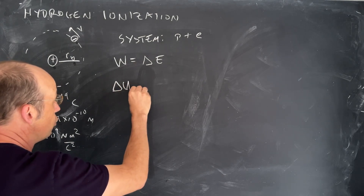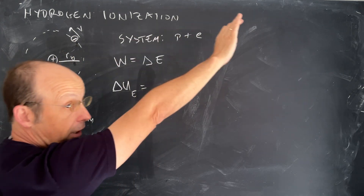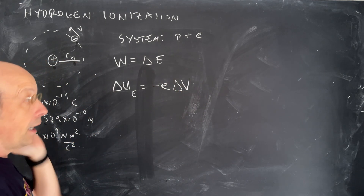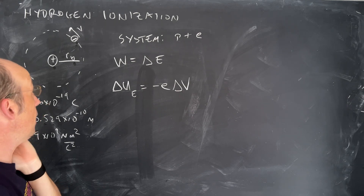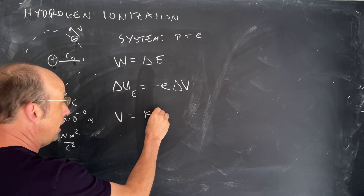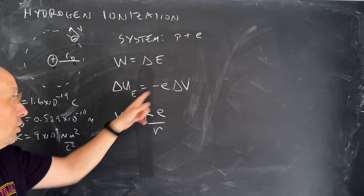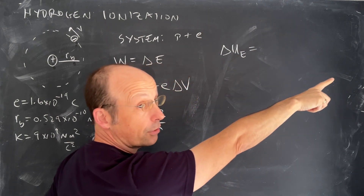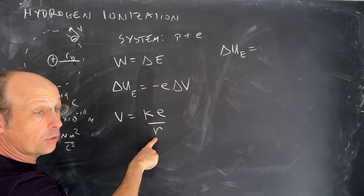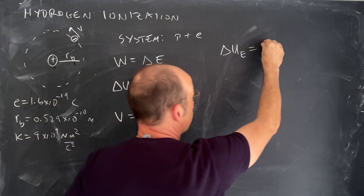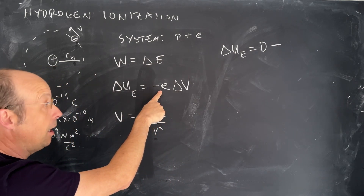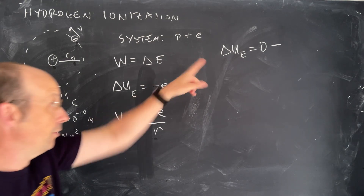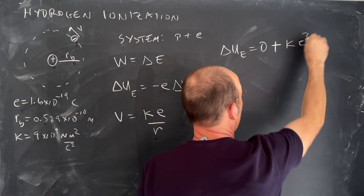So the change in Ue is going to be equal to, for the system, the charge of the electron — which is negative e — times the change in electric potential. We can define the electric potential due to a point charge as Ke/R. So this change in potential energy: if I take the electron to an infinite distance away, R becomes very large and the potential goes to zero. So the final potential is zero minus the initial. The initial is negative because we have a negative electron charge and a positive proton charge, so zero minus the negative gives us plus KE²/R_b.